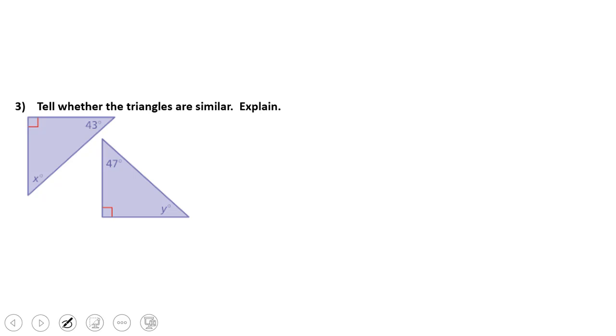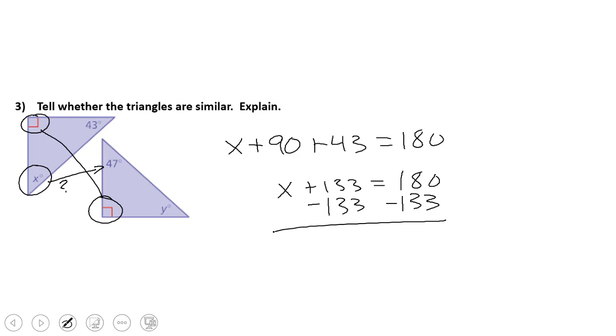All righty. So here we have, well, oh, which angles are congruent now? That's right. We have this right angle right here. Those are the same. So I'm asking myself, is X congruent to 47? Are they the same? So I say X plus 90 plus my 43 is equal to 180. And so I simplify 43 plus 90, X plus 133 is equal to 180. When I subtract my 133, I get that X is equal to 47 degrees.